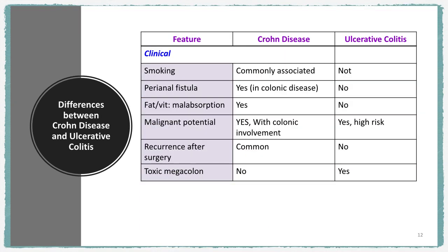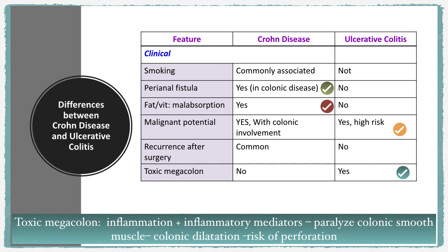As for clinical manifestations, the clinical features are similar — diarrhea, abdominal cramps, discomfort, and low-grade fever. Fistula is more common in Crohn's disease because it is transmural. Malabsorption also occurs in Crohn's disease because it mainly involves the small intestine. Malignant potential is higher risk in ulcerative colitis because it mainly involves the colon. Toxic megacolon is more common in ulcerative colitis because the inflammation is more severe — associated with inflammatory mediators' response — which can cause paralysis of colonic smooth muscle, leading to colonic dilatation with risk of bowel perforation.